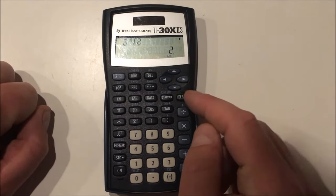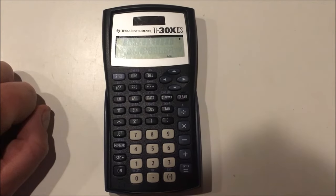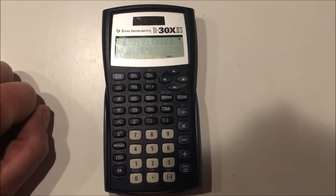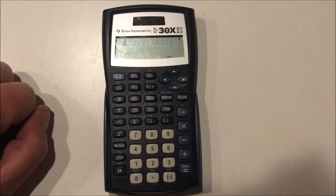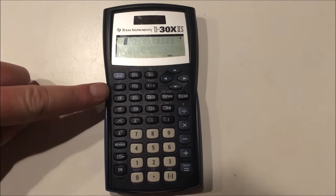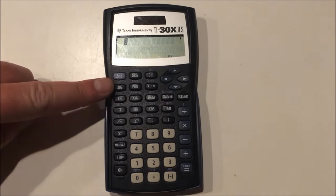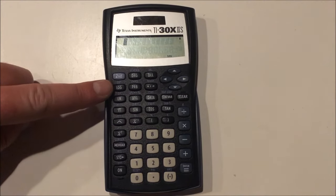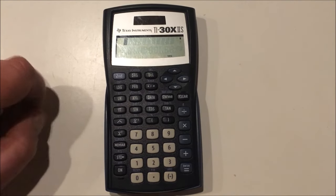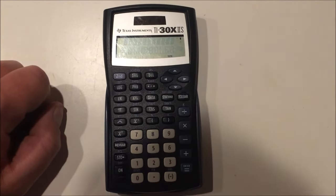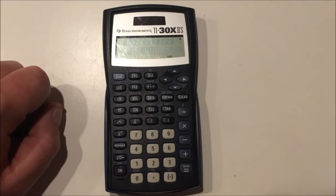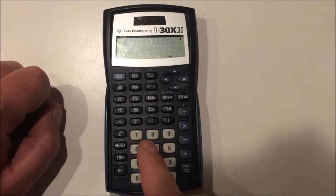Now, how do we do scientific notation with this calculator? Well, this is a neat scientific calculator. There's actually two ways to do it. The log button, the second shift feature of the log button, you can see a little 10 to the x power. So, if we try that, let's do 5 times 10 to the 6. I'm going to put the 5, I'm going to put times, and then second log. It gives me this, which looks like 10 to the power of.